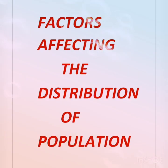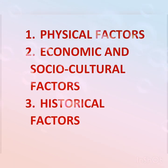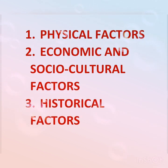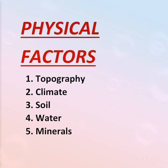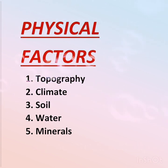Population distribution on earth is influenced by different factors, which have been classified into three categories: physical factors, economic and social factors, and historical factors. Physical factors, also known as geographical factors, include topography, climate, natural vegetation, soil, water, and mineral resources.